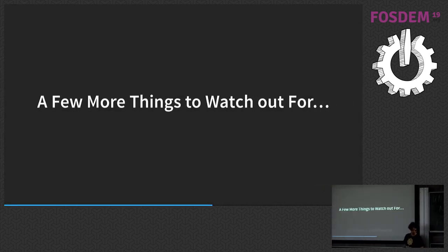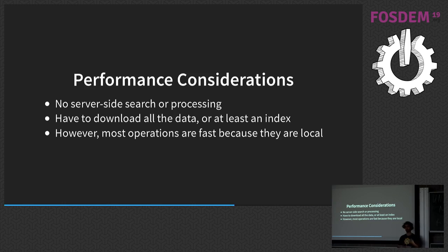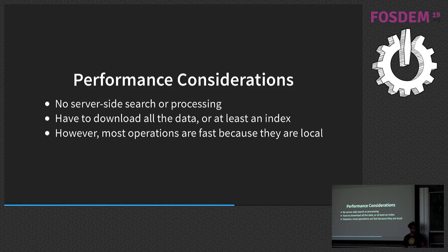There are a few other things to watch out for. First, performance considerations: you don't have any server-side search or processing. Normally, an IMAP client would do a search on the server — you can't do that if the server can't access the data. What you'd do instead is download all the information in advance and search it locally every time, or alternatively maintain a large local index — a smaller optimized version of the data — and keep that maintained so you can search based on it and only download that small part each time.